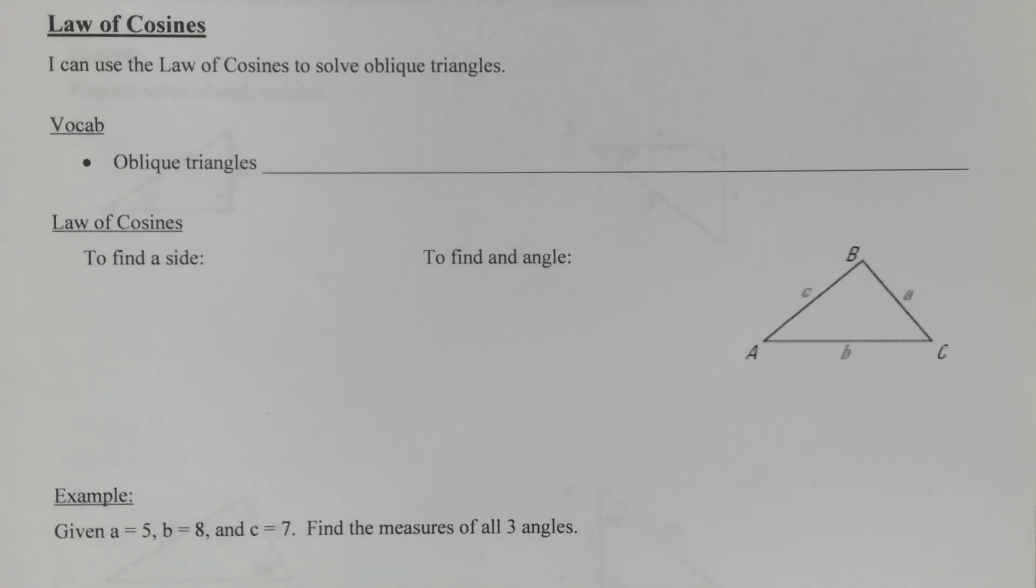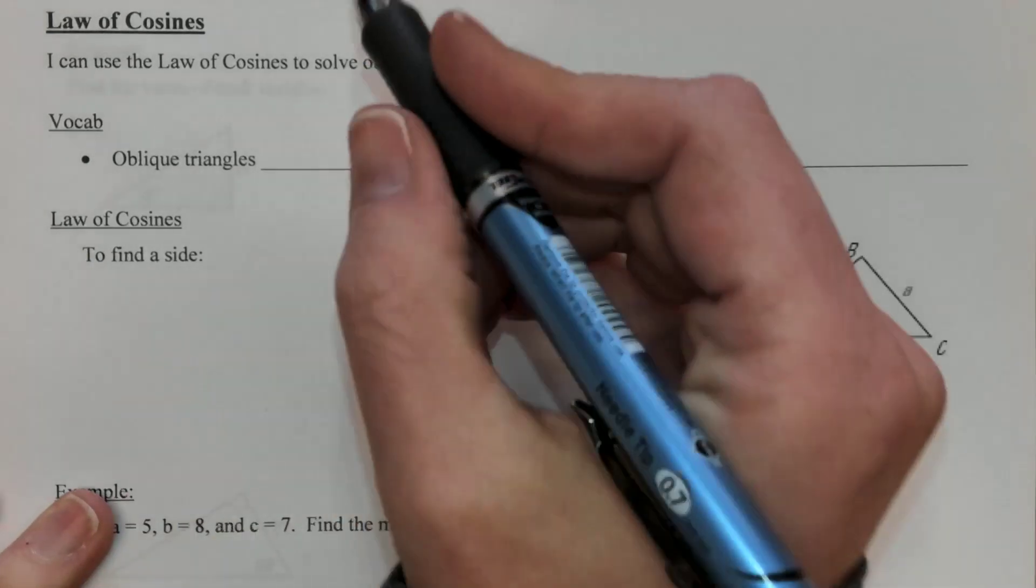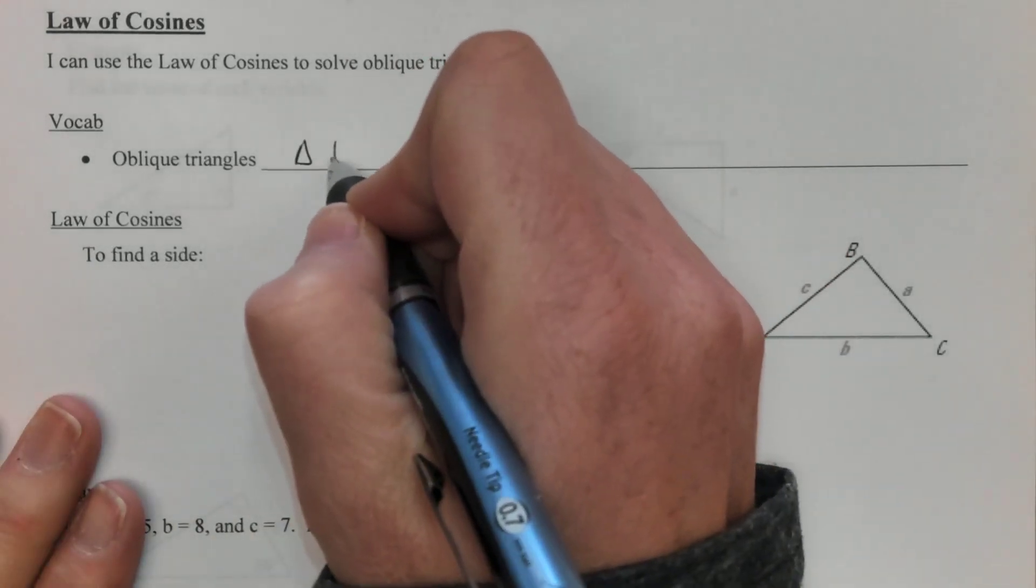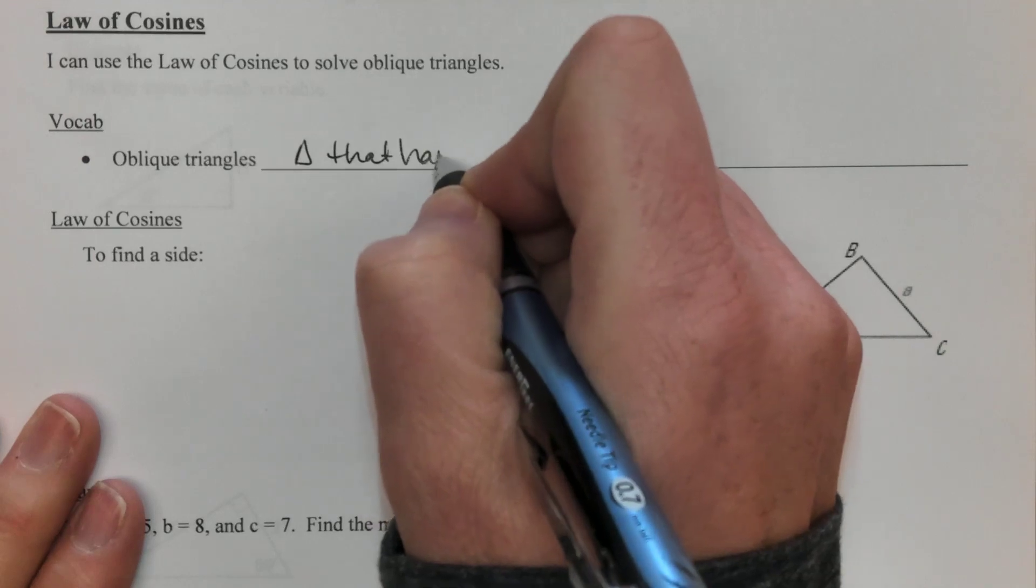Okay, this lesson is all about the Law of Cosines. We introduced you to both Law of Sines and Law of Cosines because we eventually have to deal with oblique triangles, and oblique triangles are just triangles that have no right angle.